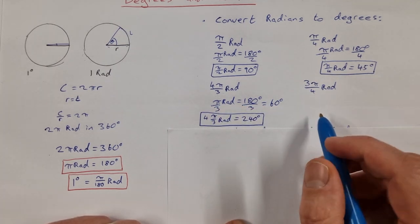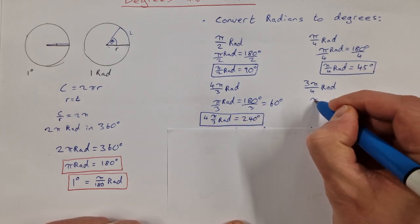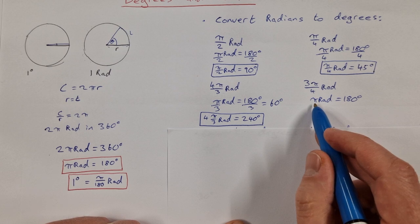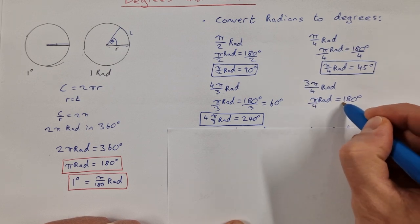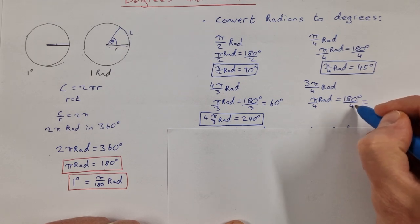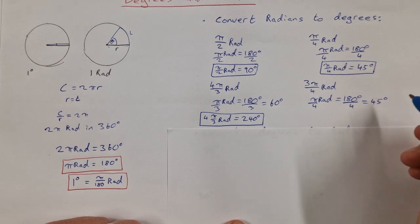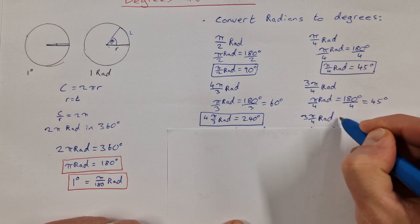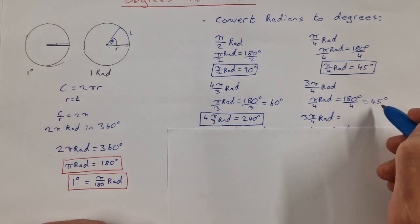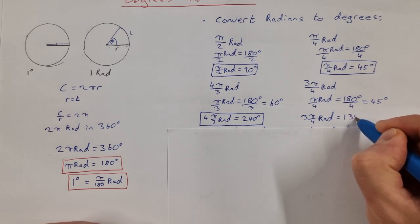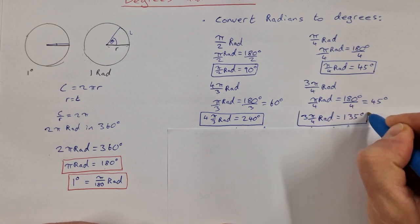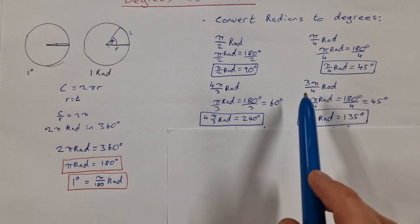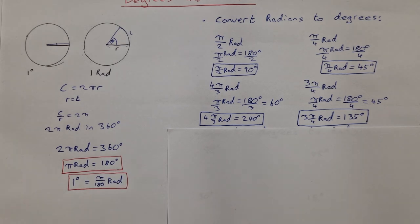What about 3π/4 radians? Starting with π radians equals 180 degrees, I divide both sides by 4: π/4 radians equals 45 degrees. Then multiplying by 3: 3π/4 radians equals 45 times 3, which is 135 degrees. This approach works for any radian angle given in terms of π — just start with π radians equals 180.